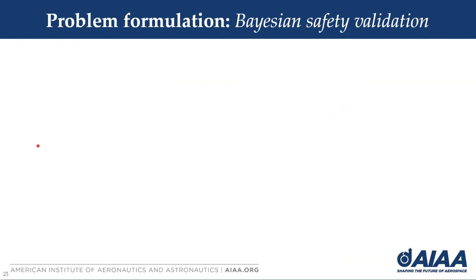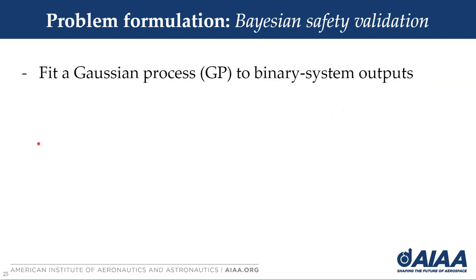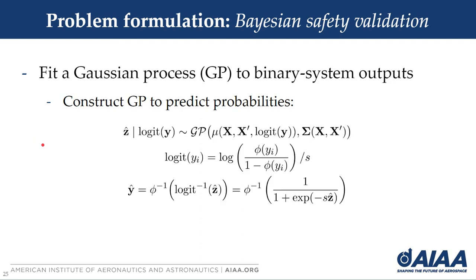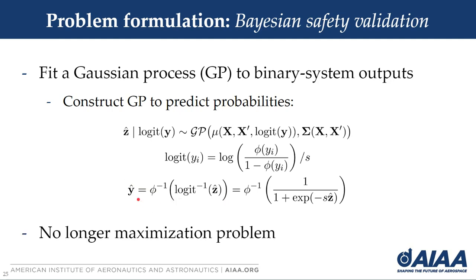To address this more restrictive case, we can fit the Gaussian process to the binary outputs by constructing the GP to predict probabilities. We use the GP to predict logits and then convert back through a sigmoid, or inverse logit, to get the predicted y-hat. So this is no longer a maximization problem, and the way we address this is threefold.